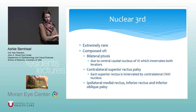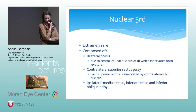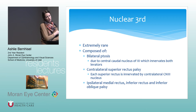Nuclear third nerve palsy is extremely rare. It consists of bilateral ptosis from the central caudal nucleus of CN3, which innervates both levators. You'll also get a contralateral superior rectus palsy because each superior rectus is innervated by the contralateral CN3 nucleus, along with ipsilateral medial rectus, inferior rectus, and inferior oblique palsy.